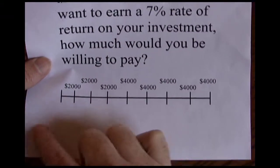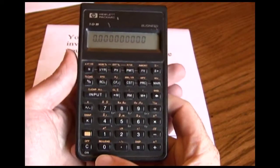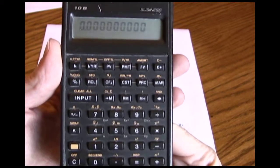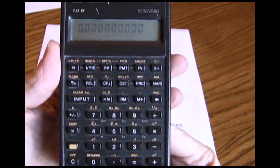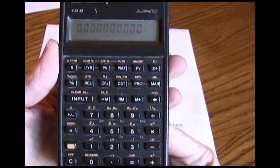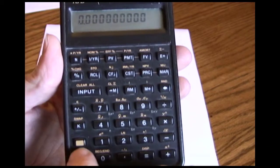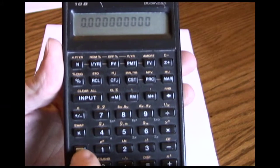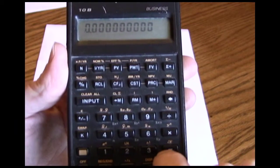We want to figure out what those are worth today — we want to calculate the present value. So we go to our financial calculator. The first thing we recognize is we're going to be using our cash flow worksheet. One problem with the cash flow worksheet is that it keeps old problems in there until we clear them out. So whenever you start a cash flow worksheet problem, the first thing you want to do is clear out anything previously entered. To do that, do Shift, Clear All. That clears out our worksheet so now we're starting from scratch.